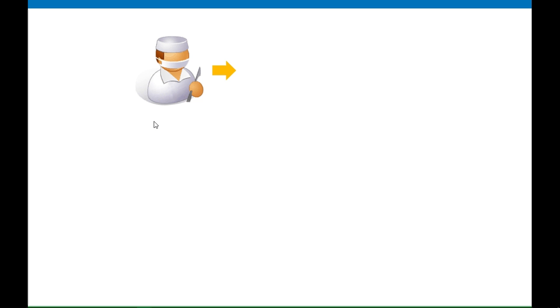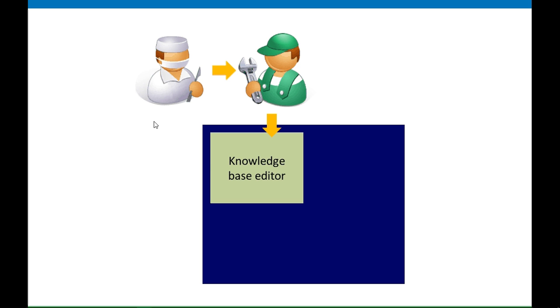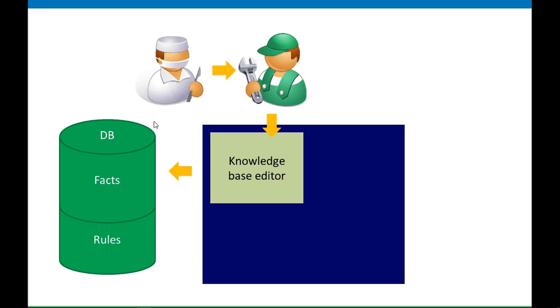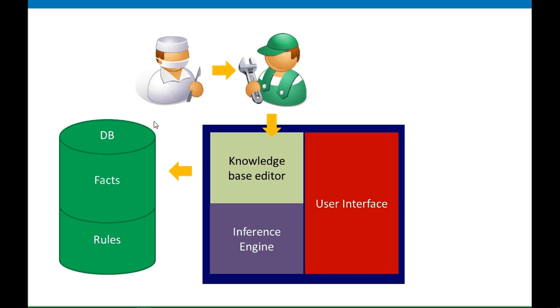Taking the medical diagnosis example: doctors, nurses, and medical professionals hold the key knowledge about a particular problem domain. A knowledge engineer comes along and questions, queries, and interrogates these experts to find out everything they know — the facts they use and how they decide which facts to apply. The engineer codifies all of that using a knowledge base editor into a database made up of facts and rules, which control what questions are asked to evaluate the data.